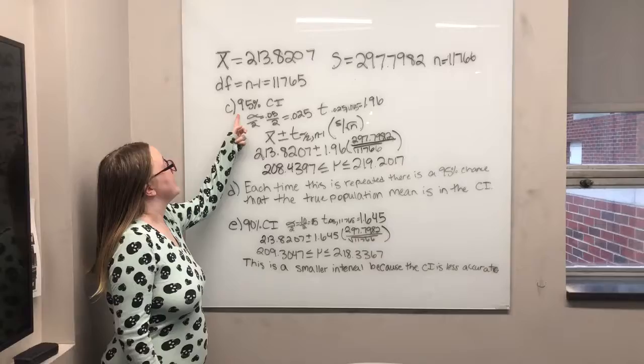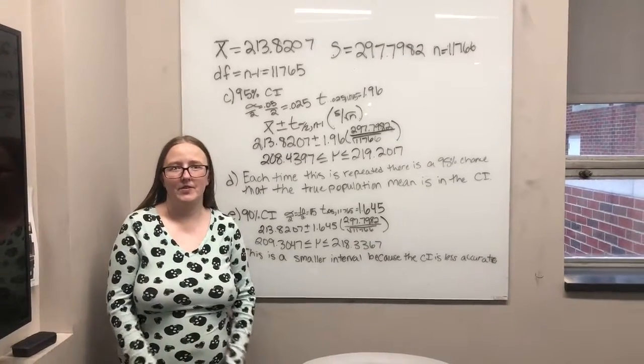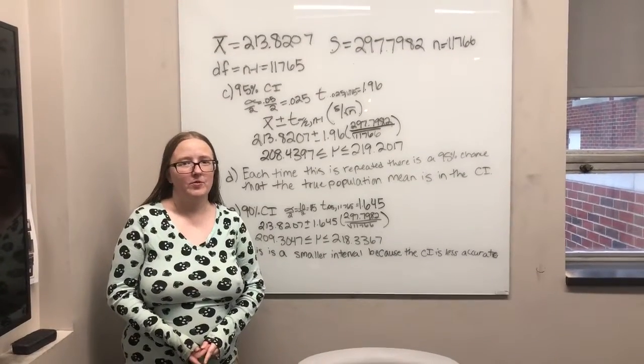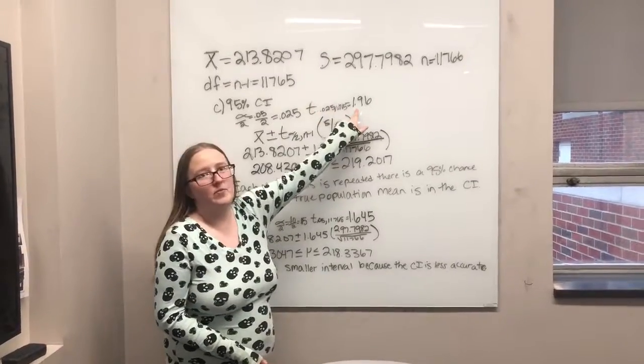So to find a 95% confidence interval, your alpha is 0.05, so you divide that by 2, and then you look in the table and you find that the t-value associated with that is 1.96.